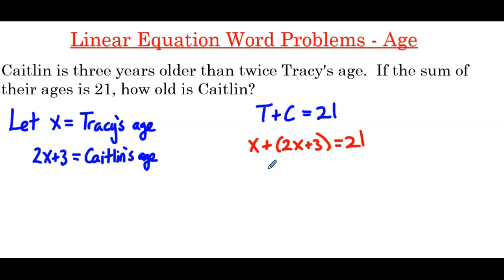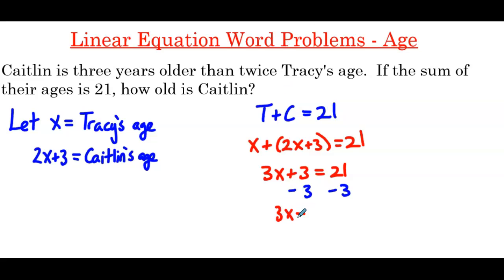Combining the like terms on the left-hand side gives us 3x plus 3 equals 21. We subtract 3 from both sides to get 3x equals 18. Then multiply both sides by one third, or divide by 3, and we have x equals 6.